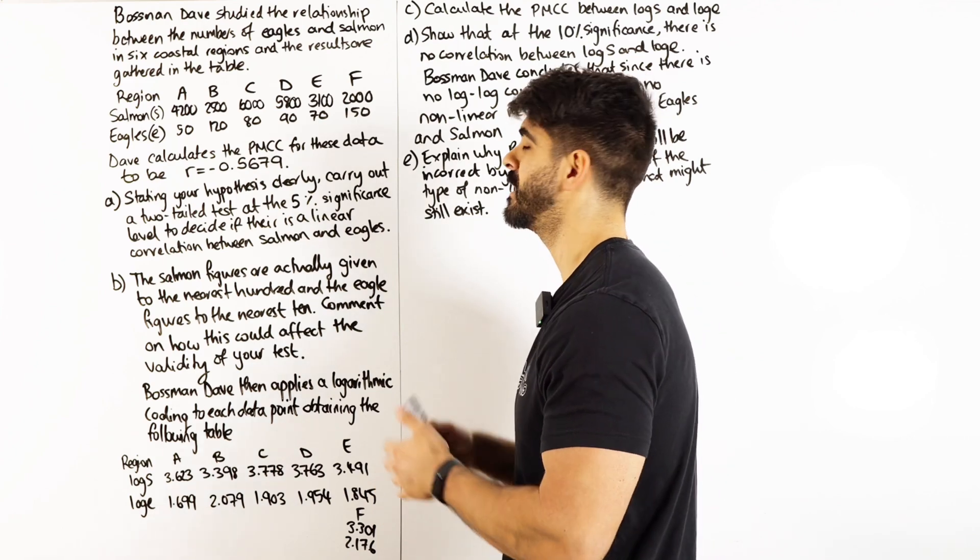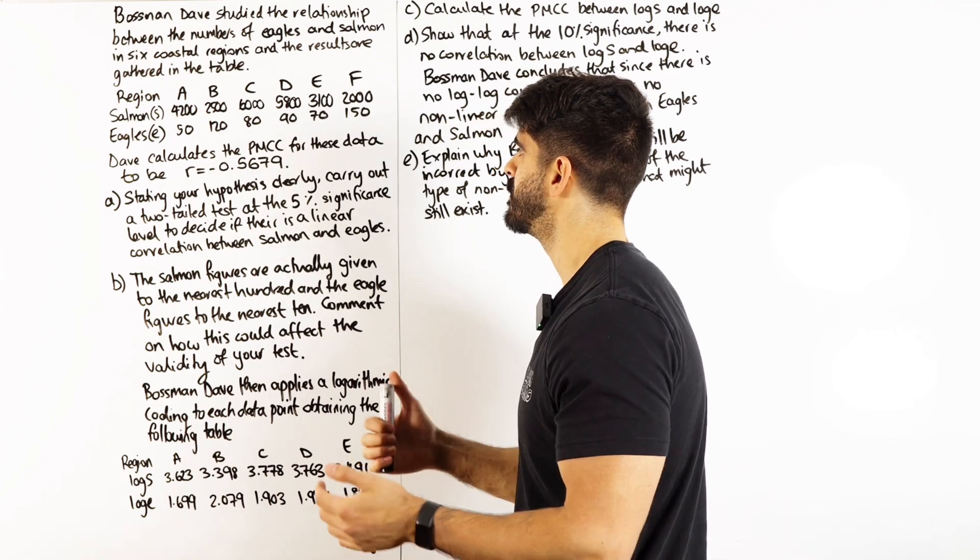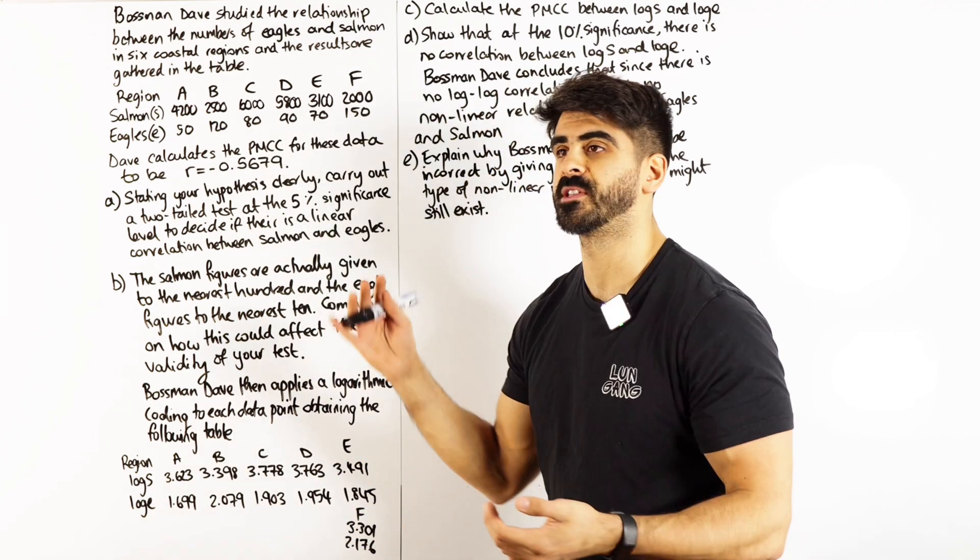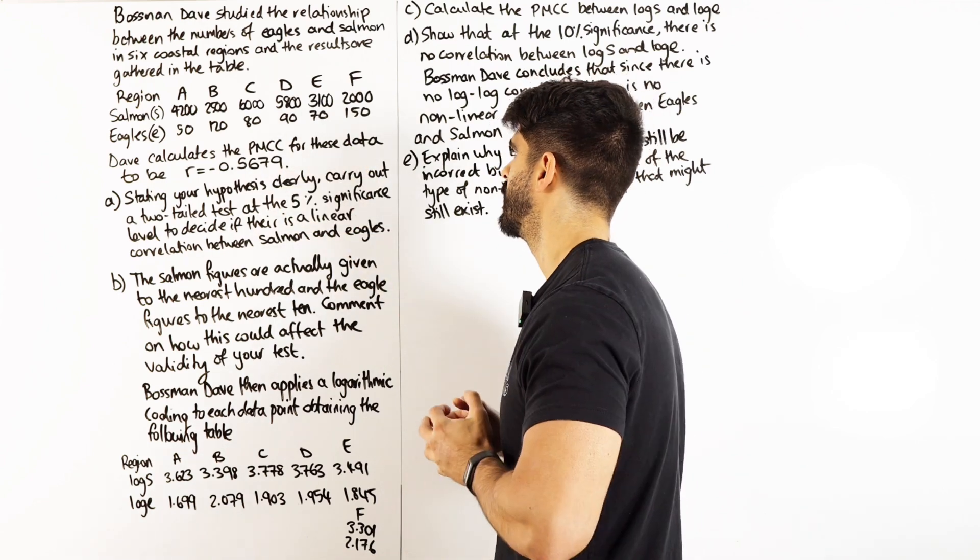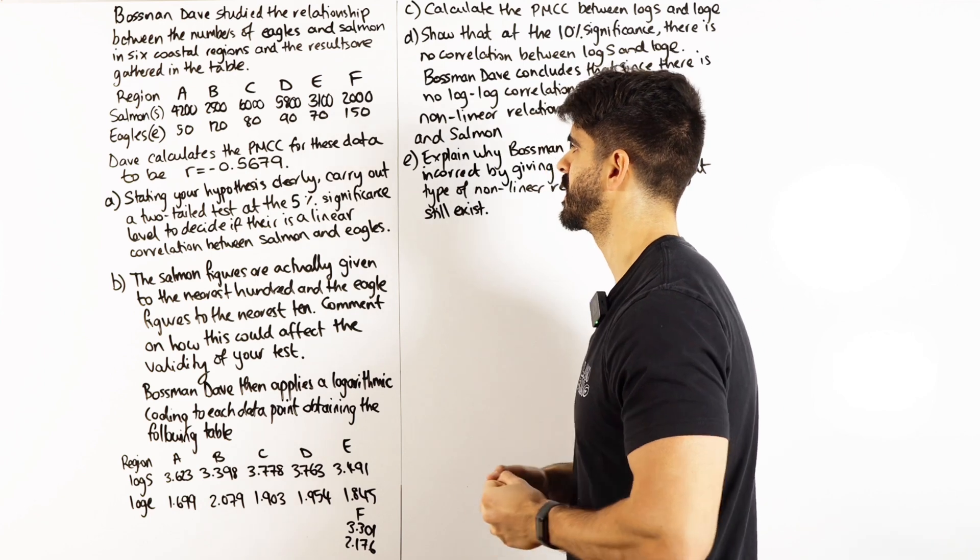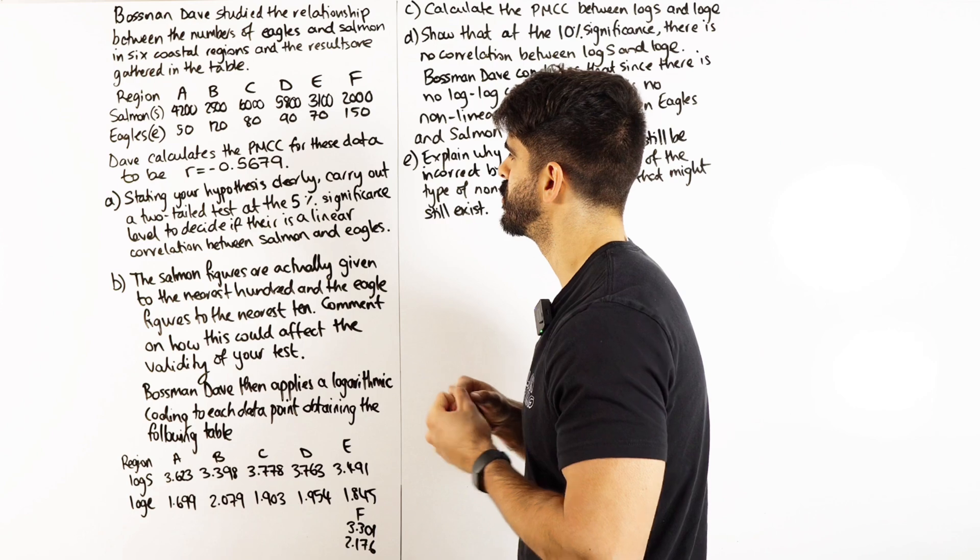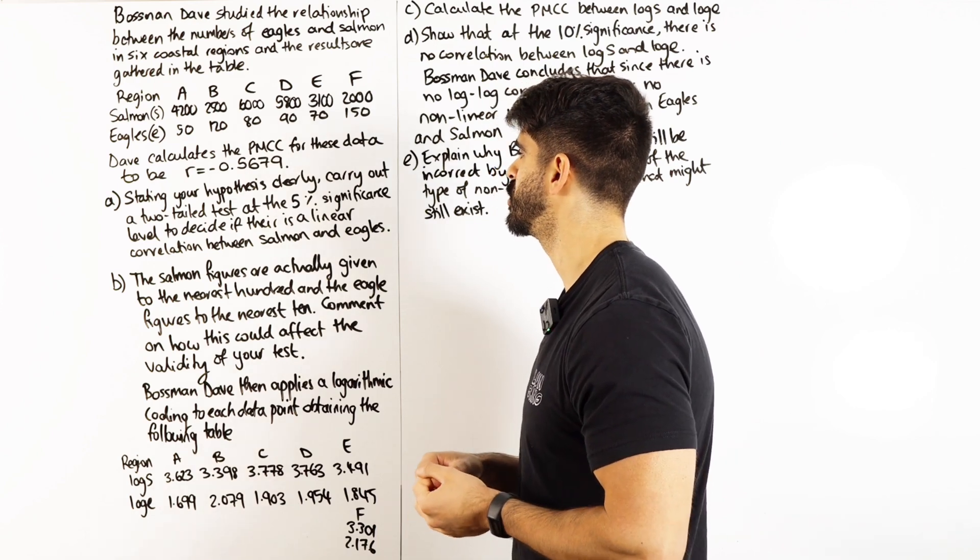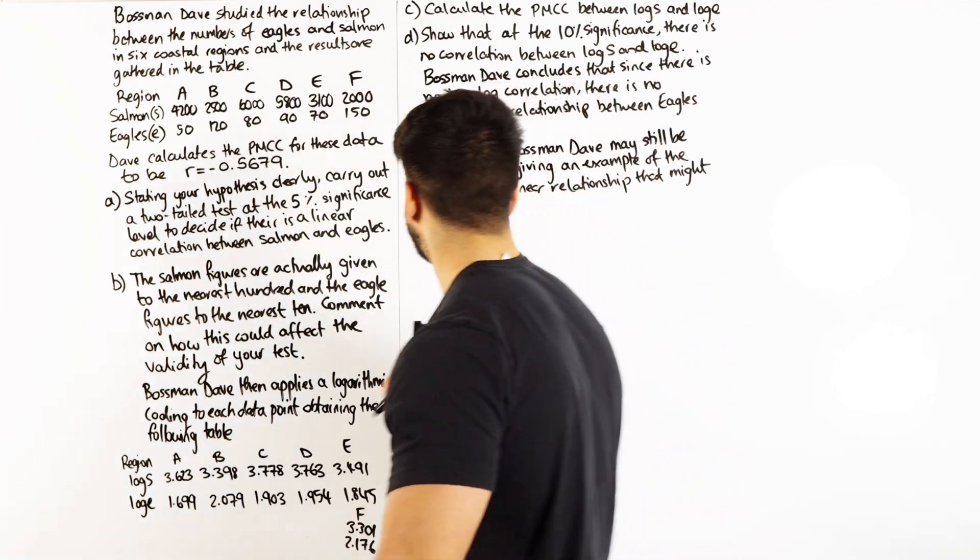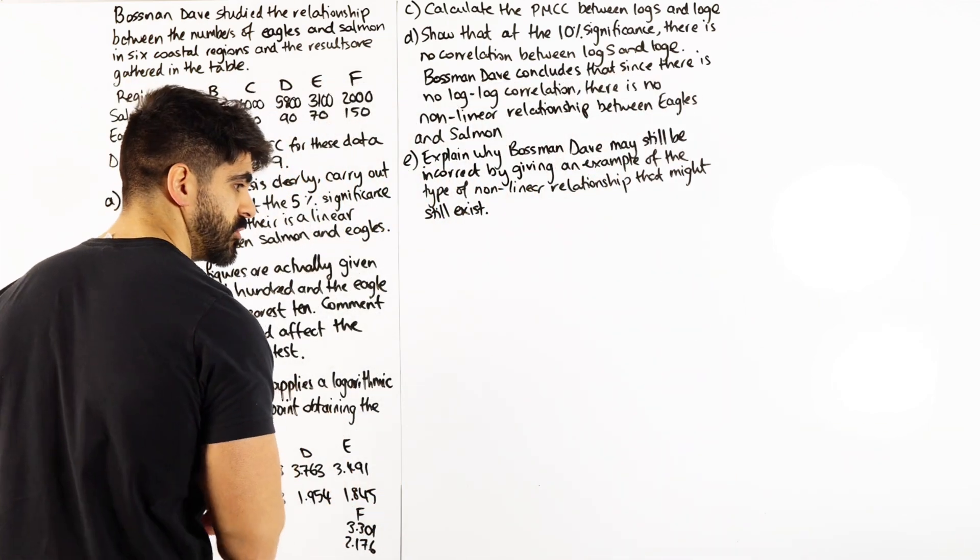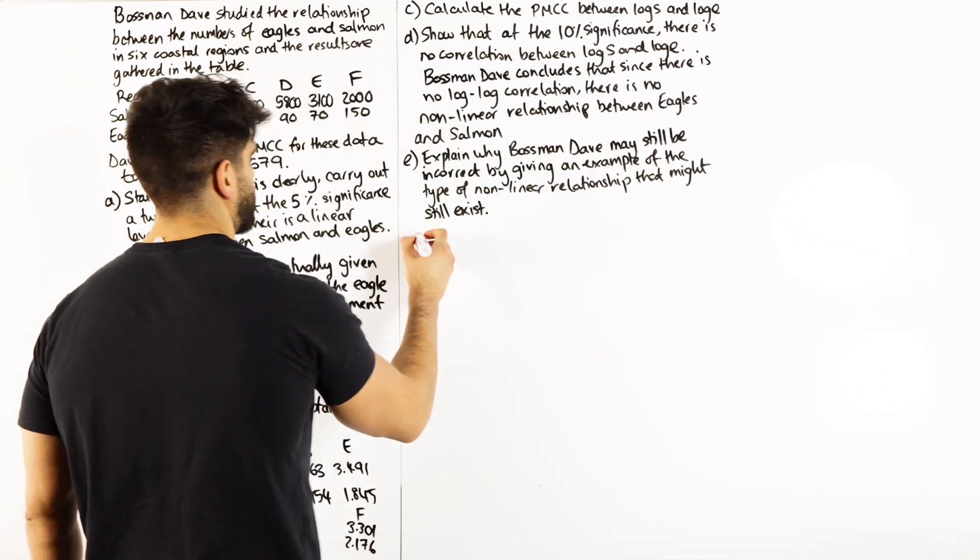We've got some PMCC correlation coefficients revision for you guys. I would say this is the most comprehensive question you could get on the topic. So make sure you save this video. Let's see how it goes. It says, Bossman Dave studied the relationship between the numbers of eagles and salmon in six coastal regions and the results are gathered in this table.